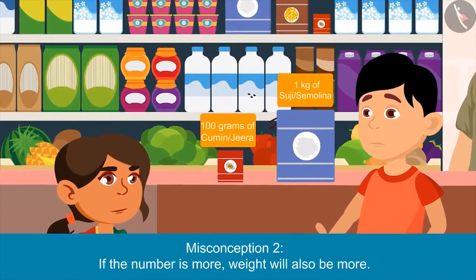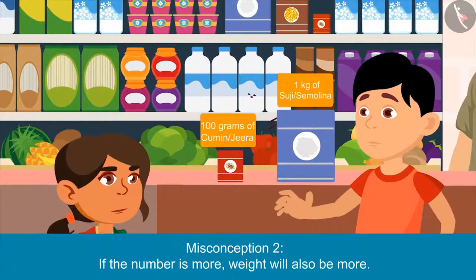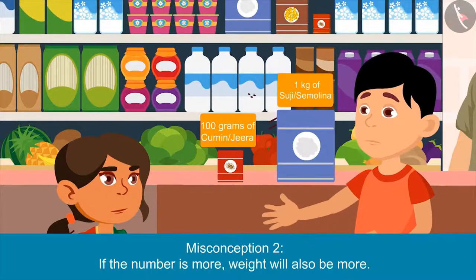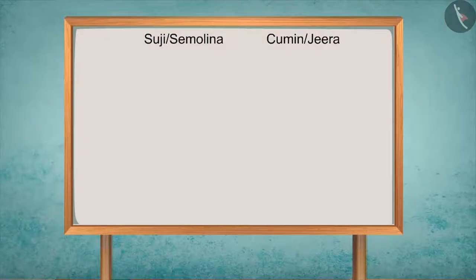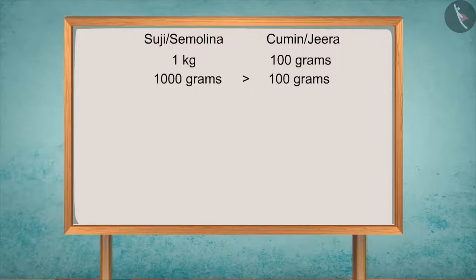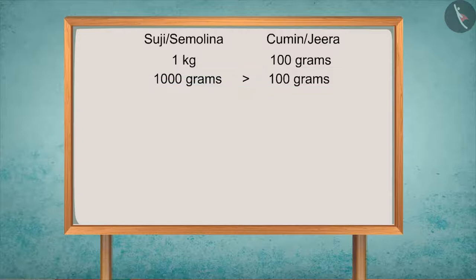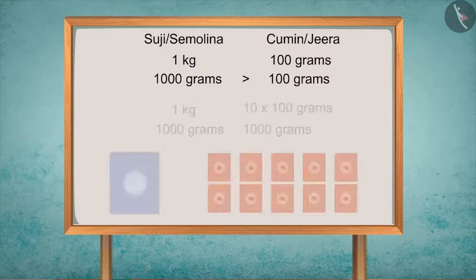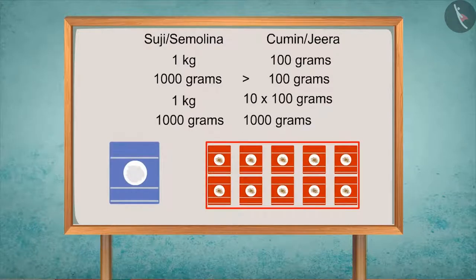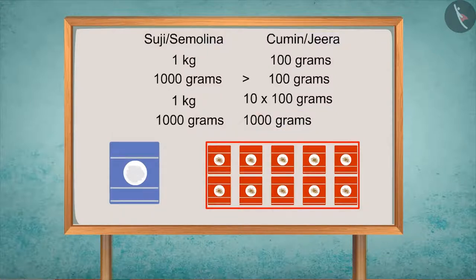Which of these two packets was heavier? Your packet of suji — because the packet of suji is of one kg, and one kg is equal to 1000 grams. So 1000 grams of suji is heavier than 100 grams of jeera. And if we put ten 100-gram packets together, their total weight would be 1000 grams, which would be equal to one kg of suji.